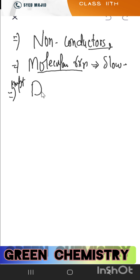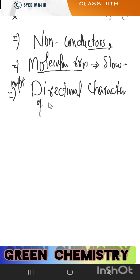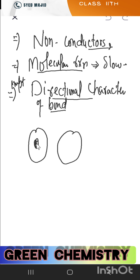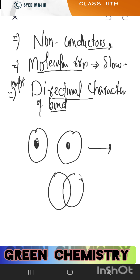An important property of covalent bonds is the directional character of the bond. The covalent bond is directional in nature. It forms by overlapping of orbitals between two atoms. The attraction exists along the inter-nuclear axis — the line between the two nuclei — and is absent on all other sides.